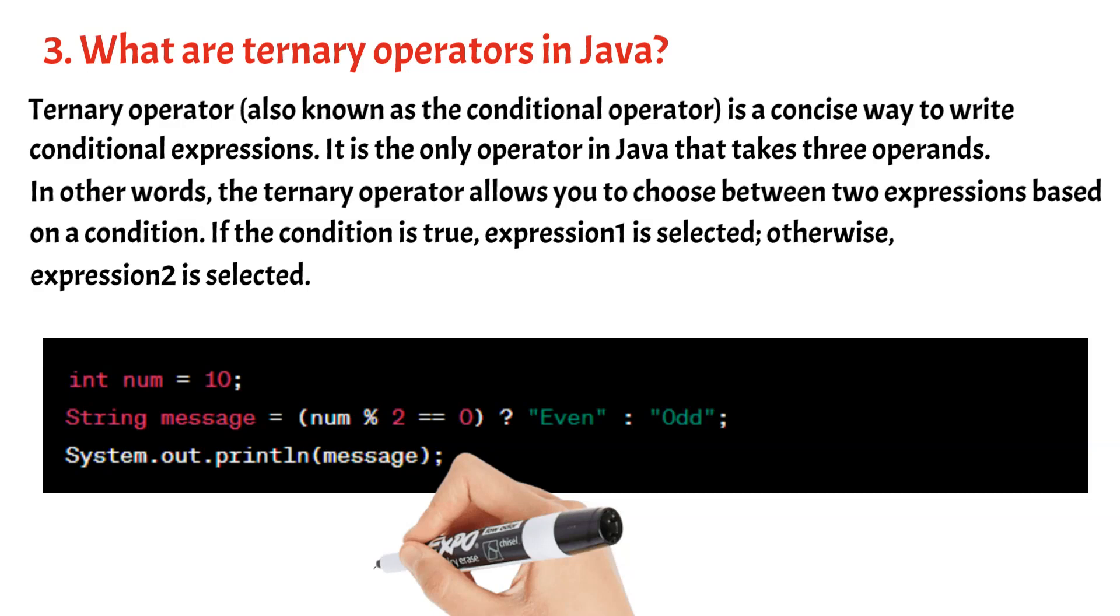If the condition is true, the expression "even" is selected as the value of message, otherwise the expression "odd" is selected. The selected value is then printed, resulting in either even or odd being displayed based on the value of the number.